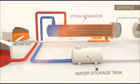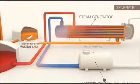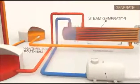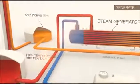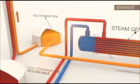Once the hot salt is used to create steam, the cool molten salt is then piped back into the cold salt storage tank where it will then flow back up the receiver to be reheated as the process continues.